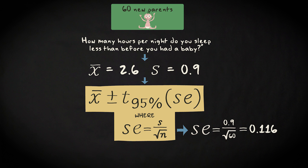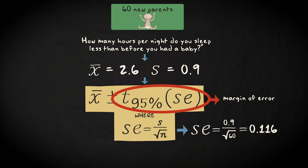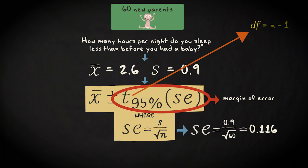So our standard error — the estimated standard deviation of the sampling distribution of the sample mean — equals 0.116. To compute the margin of error, we have to multiply this value with the t-score for the 95% confidence level. The t-score depends on the degrees of freedom. df equals n minus 1. We have a sample of 60, so 60 minus 1 equals 59.